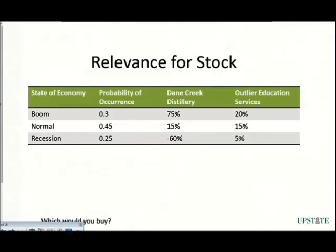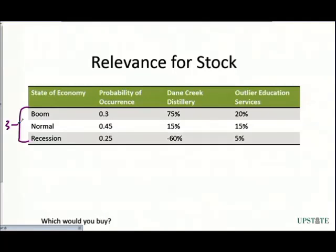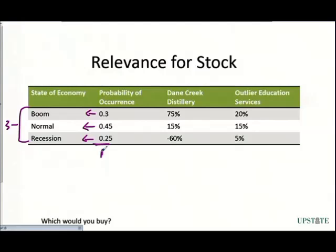Now we're going to open this up into the relevance for a stock. We're going to expand this out into three different states. We assess a probability to each of these states: a boom state, a normal state, and a recession state. Naturally there can be a big boom, a smaller boom — there's variety — but we simplify it to these three states. We have a 0.3 probability of a boom, 0.45 of normal, and 0.25 of a recession. All of these add up to one. Then next to those probabilities we're going to look at two different companies.